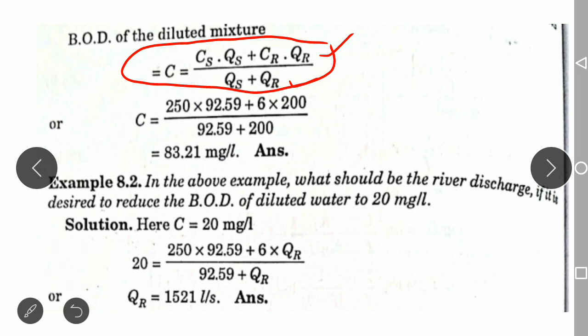Substituting all the given values into the formula, you will get the BOD of the diluted mixture. The result is 83.21 mg per liter. This is how you calculate the BOD concentration of the mixture whenever sewage has been disposed into natural streams.